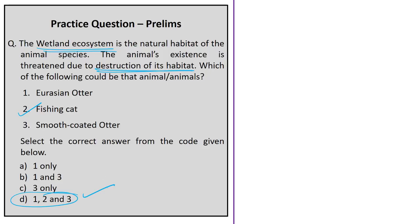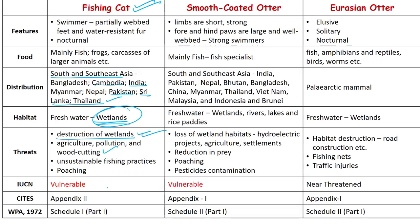The fishing cat is twice the size of a typical house cat, with a powerful build and stocky legs. It is an adept swimmer that frequently enters water to prey on fish — hence the name. It is even known to dive to catch fish, and also preys on frogs, crustaceans, snakes, birds, and scavenges on carcasses of larger animals. Its swimming ability is due to partially webbed feet and water-resistant fur. The fishing cat is a nocturnal species and is listed as Vulnerable on the IUCN Red List, listed in Appendix 2 of CITES, and included in Schedule 1 Part 1 of the Wildlife Protection Act of 1972.